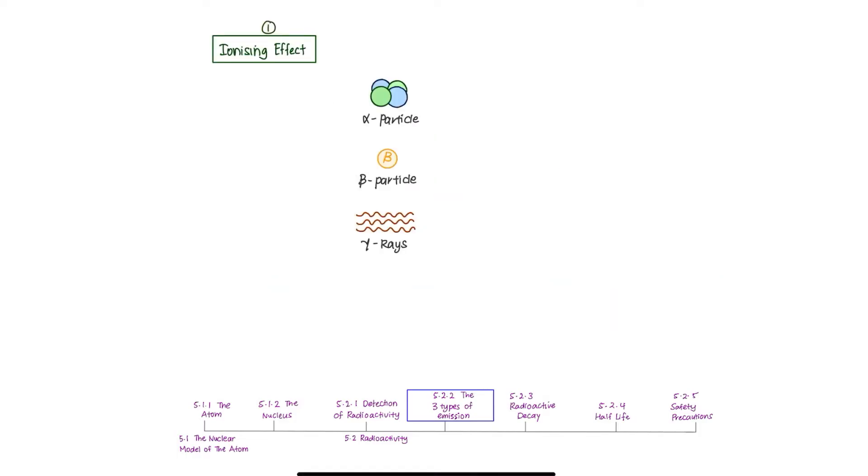Firstly, the ionizing effect of radiation. Ionization is the process of which an atom becomes negative or positive by gaining or losing electrons. The ionizing effect for alpha, beta, and gamma depends on two factors: the kinetic energy, and the charge of the type of radiation.